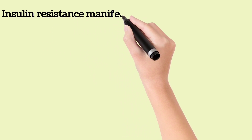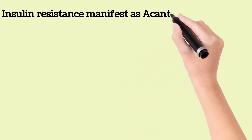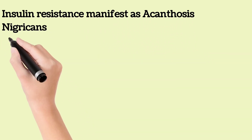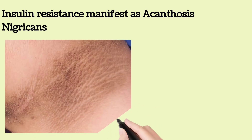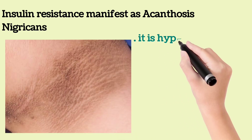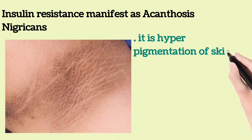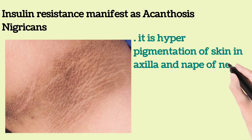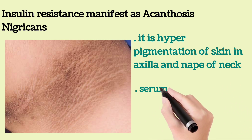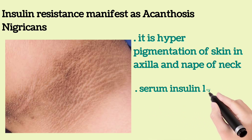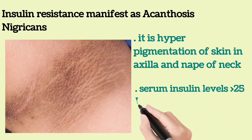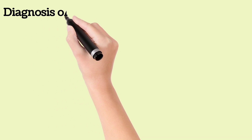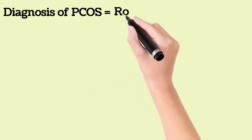Insulin resistance manifests as acanthosis nigricans — hyperpigmentation of the skin in the axilla and nape of the neck. Serum insulin level will be about 25 international units.